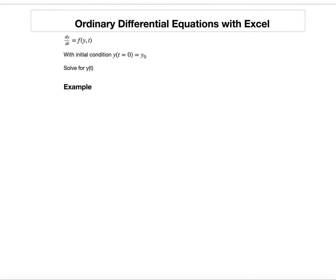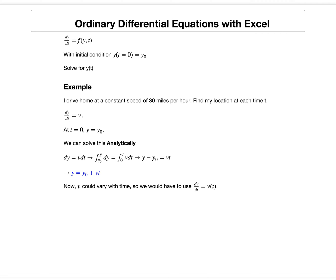Let's give a quick example. Suppose I drive home at a constant speed of 30 miles per hour. I want to find my location at each time t. In this case, dy dt equals v, where y is my position, t is time, and v is my velocity. At time 0, my initial position is y0.